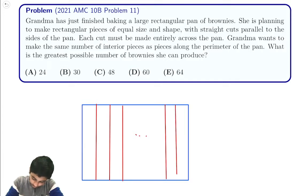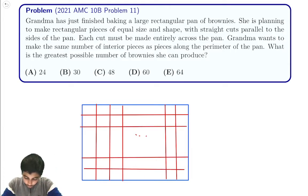We're dividing it into a bunch of rectangles, essentially, is what we're doing. And they're dividing something like this, maybe. So what is the greatest number of brownies that Grandma can produce?